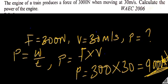Another example: how long will a man of 60 kg take to climb a height of 22 meters if he expends energy at a rate of 0.25 kilowatts? Take g equal to 10 meters per second squared.